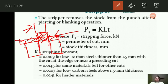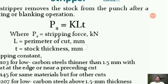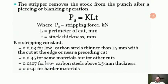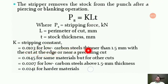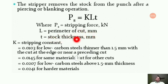A general formula is used: PS is the stripping force in kilonewtons, and the formula is PS = KLT. K is the stripping constant with values of 0.013 for low carbon steels thinner than 1.5 mm with cut at the edge or near a preceding cut, 0.0145 for the same materials but for other cuts, 0.0207 for low carbon steels about 1.5 mm thickness, and 0.0241 for harder materials. L is the perimeter of the cut in millimeters and T is the stock thickness.